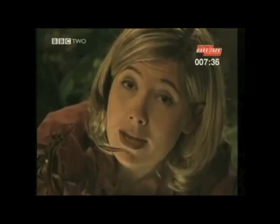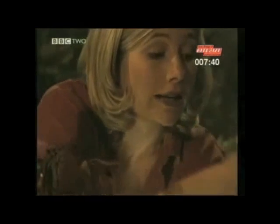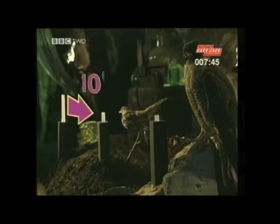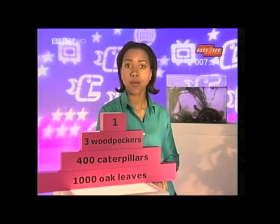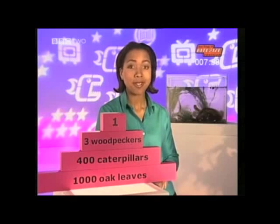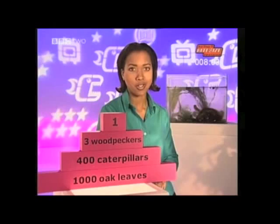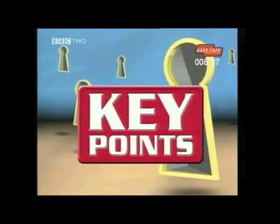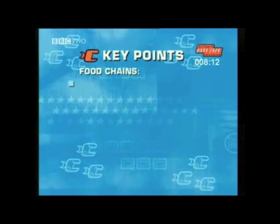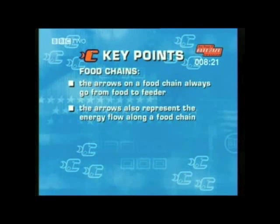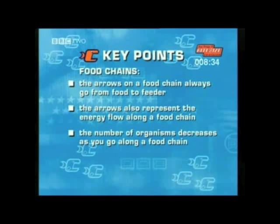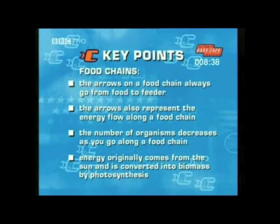The 90% that isn't transferred is not available to the food chain because it's the energy the plant needs each and every day to survive — driving all the reactions to make new cells, which in turn produces leaves, flowers, and seeds. In fact, all levels of the food chain transfer 10% of the energy they receive onto the next level. So 90% of energy is lost from food chains, but it does keep everything alive. The energy in any food chain originally comes from the sun and is converted into biomass by photosynthesis.